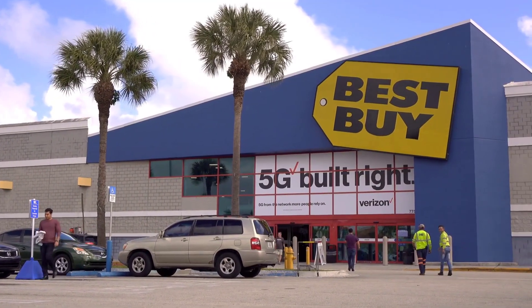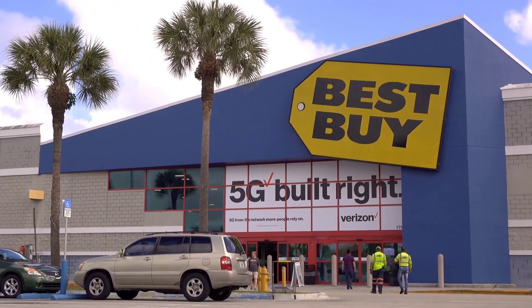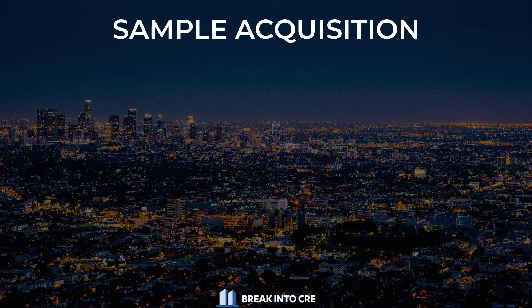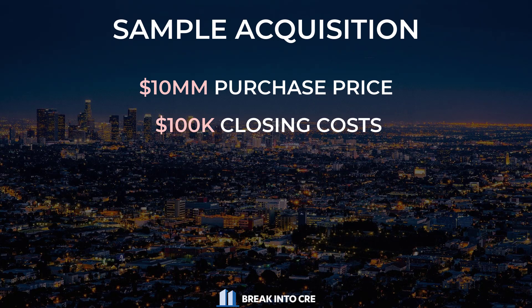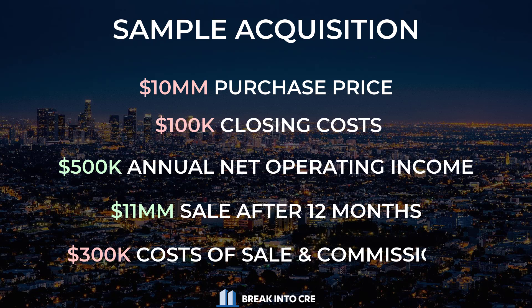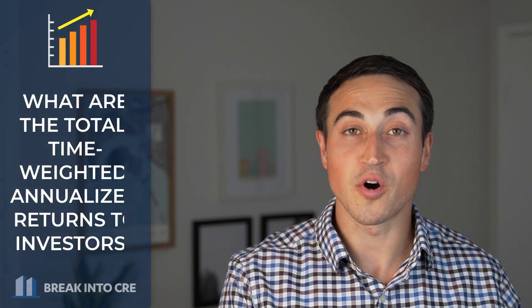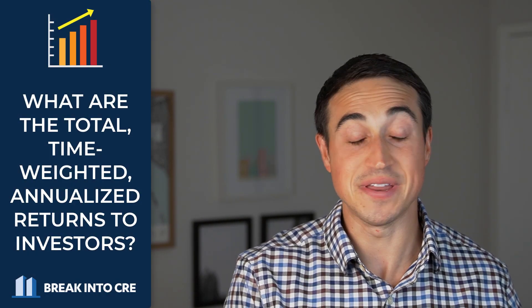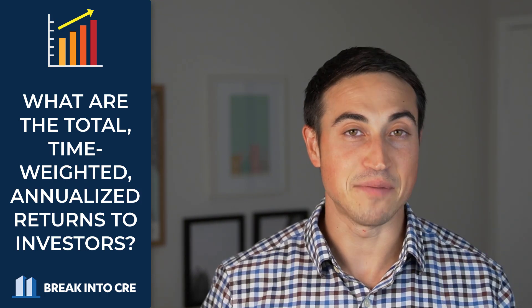For example, let's say we're analyzing a single-tenant retail property currently being marketed for $10 million, and we plan to purchase it in an all-cash transaction with closing costs of $100,000. The property is on a long-term triple net lease with annual net operating income of $500,000 starting in year one. We also plan to sell the property at the end of 12 months for $11 million, with $300,000 of sale proceeds going towards cost of sale and brokerage commissions.